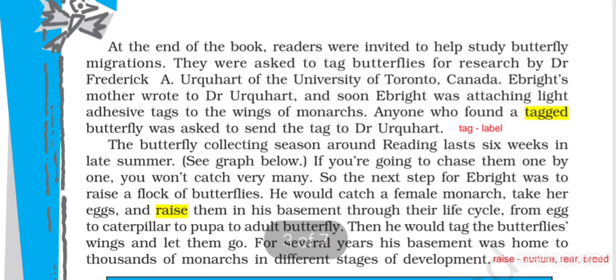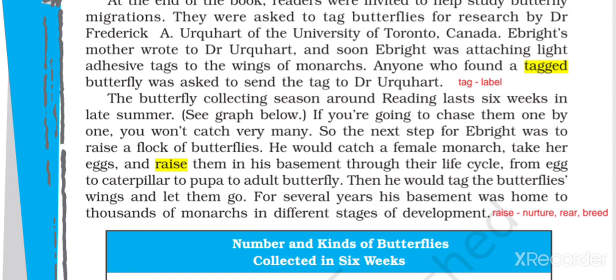At the end of the book, readers were invited to help study butterfly migrations. They were asked to tag butterflies for research by Dr. Frederick A. Urquhart of the University of Toronto, Canada. Readers were requested to put a small tag on each butterfly for the scientist's research on butterfly migration. Ebright's mother wrote to Dr. Urquhart, and soon Ebright was attaching light adhesive tags to the wings of monarchs. Anyone who found a tagged butterfly was asked to send the tag to Dr. Urquhart.